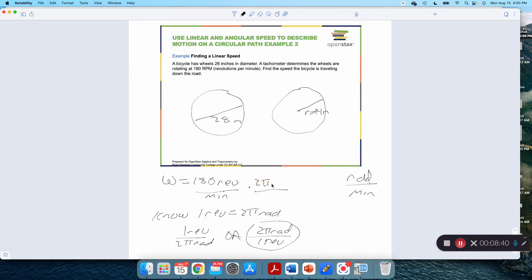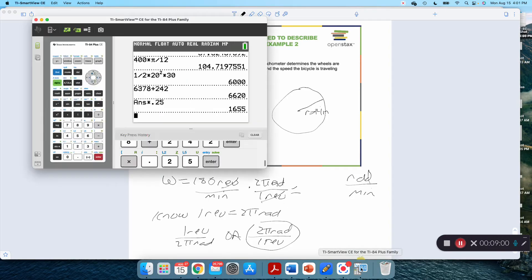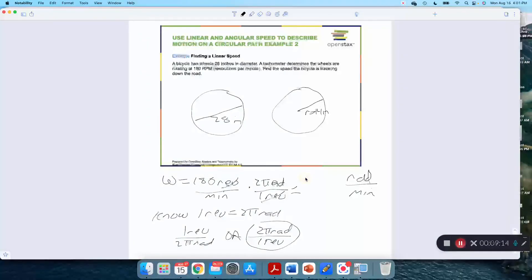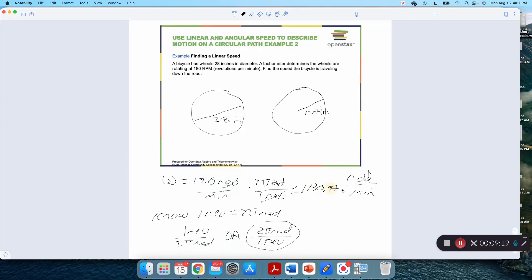If I multiply this by two pi radians per one revolution, those things are equal. I'm really multiplying by one. Revolutions cancel out and I'm left with radians over minutes which is what I want. Now just multiply across the top and across the bottom. 180 times two times pi, 1130 point 97 radians per minute.